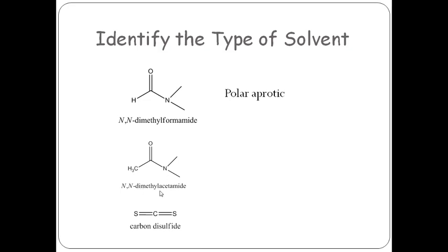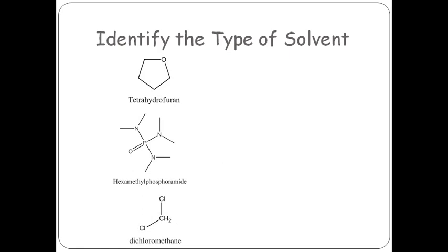N,N-dimethylacetamide — again, carbon is attached to oxygen and nitrogen, making it polar, and there is no hydrogen attached to the electronegative atom, so it is again polar aprotic. Carbon disulfide (CS₂) — there is no proton present, and the dipole moment is zero because carbon is equally attached with sulfur on either end. Due to dipole moment of 0, it becomes a non-polar solvent. THF (tetrahydrofuran) — due to the presence of oxygen with a lone pair, it is polar in nature, but there is no proton, so it is a polar aprotic solvent.